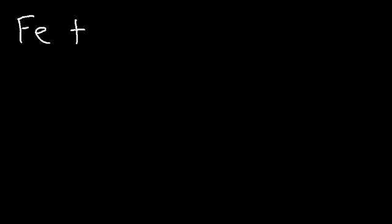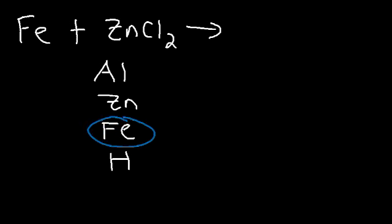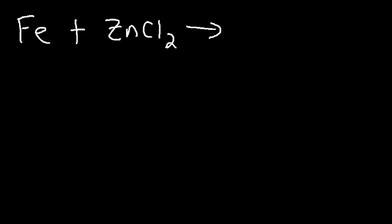Consider the reaction between iron metal and zinc chloride. What are the products and will this reaction work? On the activity series we have aluminum, zinc, then Fe, then hydrogen. Notice that Fe is below zinc, so Fe is not strong enough to displace zinc out of the solution. If you place iron metal in a solution of zinc chloride, you will observe no reaction.